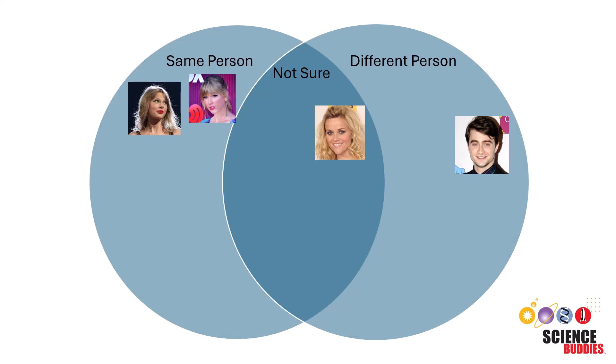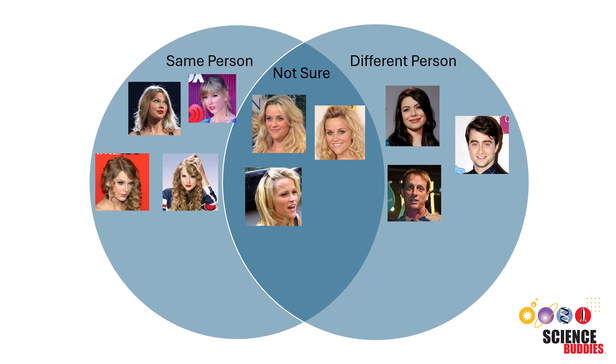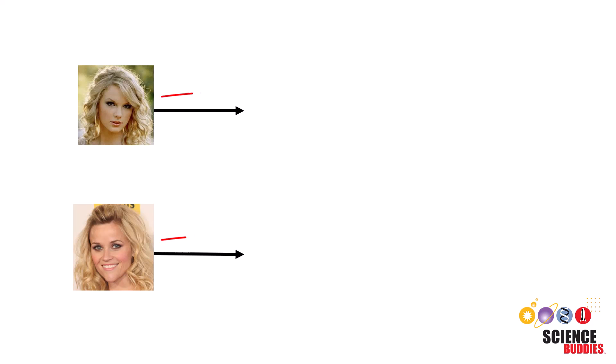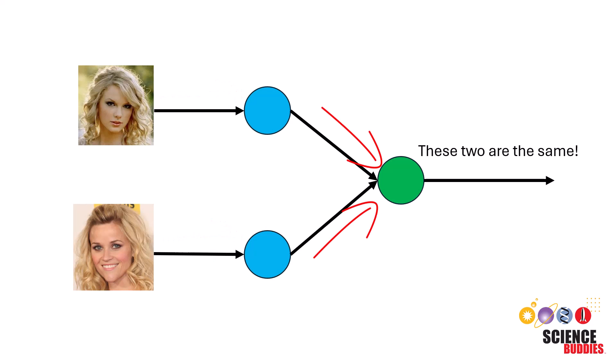During training, the network learns to pull similar inputs together and push away different inputs. The Siamese neural network will then go through the process of feedforward propagation and backpropagation to learn the similarities and differences between the inputs.